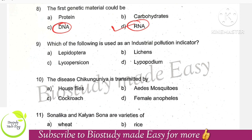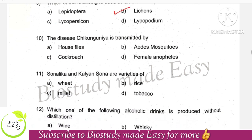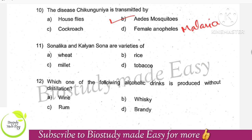Which of the following is used as an industrial pollution indicator? The right option is option B, lichens. The disease chikungunya is transmitted by — there can be confusion here — the right option is Aedes mosquito. Note: the female Anopheles mosquito transmits malaria, while chikungunya is transmitted by the Aedes mosquito.